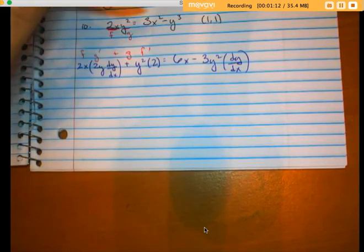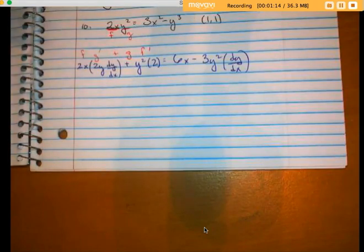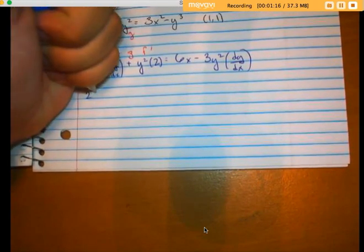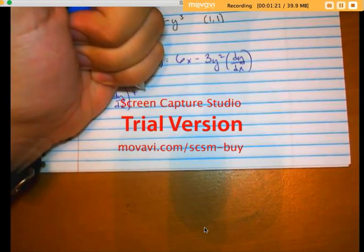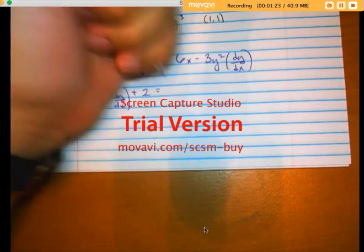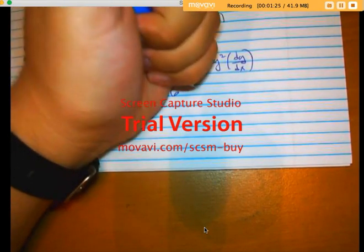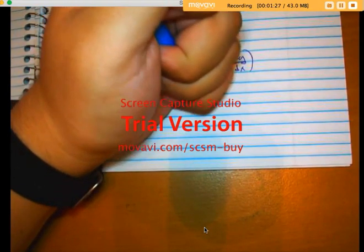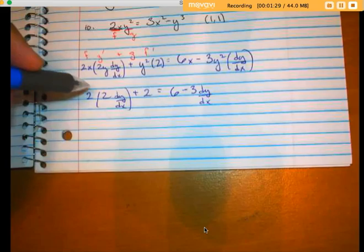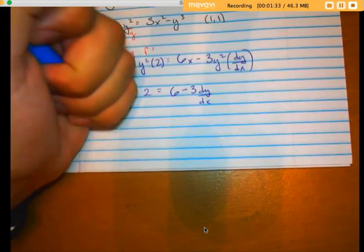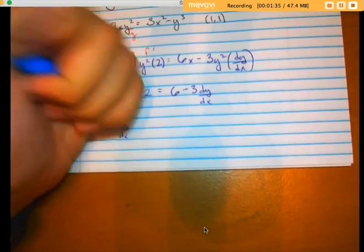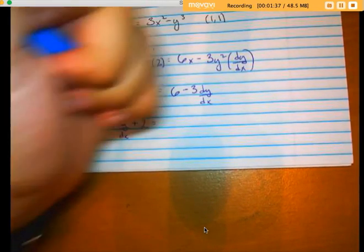Solve for dy dx: 2, 2 dy dx plus 2, this is funny, 6 minus 3 dy dx. Alrighty, solving this for dy dx: 4 dy dx plus 2 is equal to 6 minus 3 dy dx.